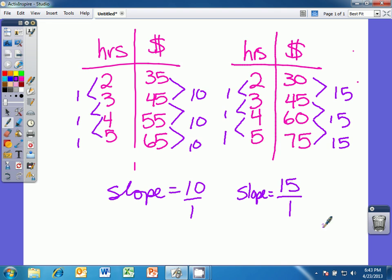So if we would graph these, we would expect that the line from table 2 would have a much steeper slope, because the vertical change, or the rise, is growing faster with 15 compared to the rise of 10 on table 1.